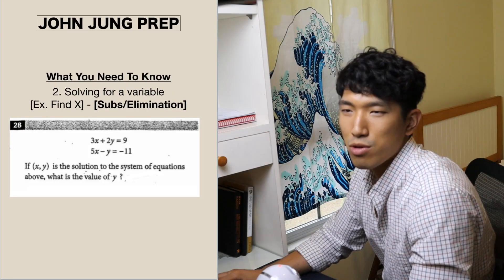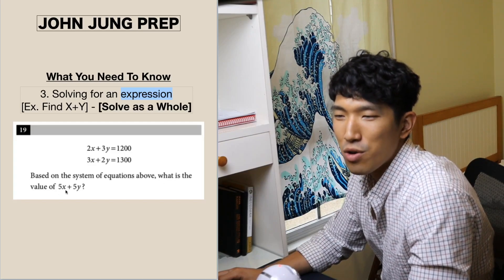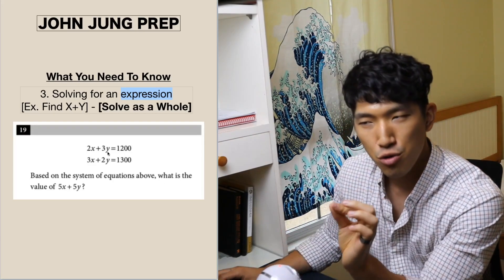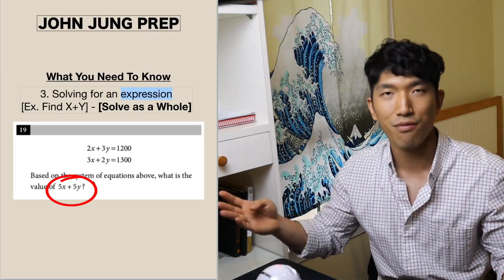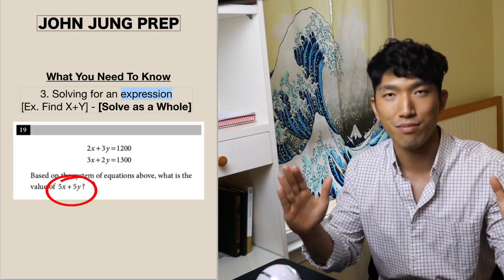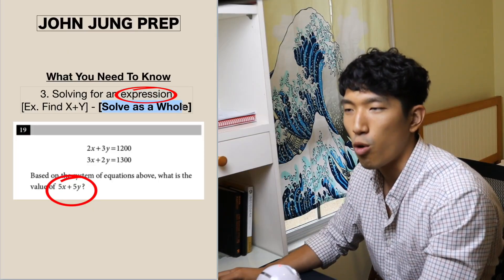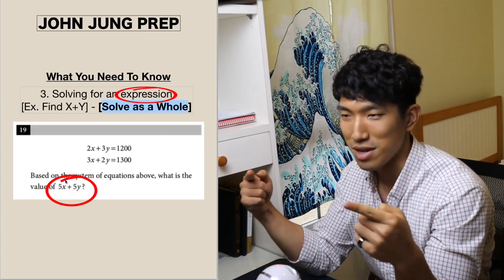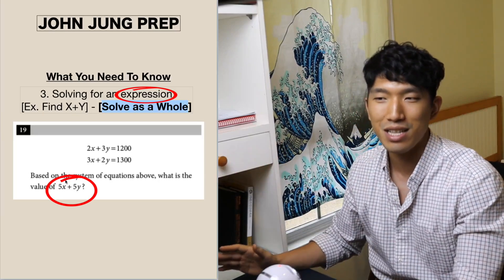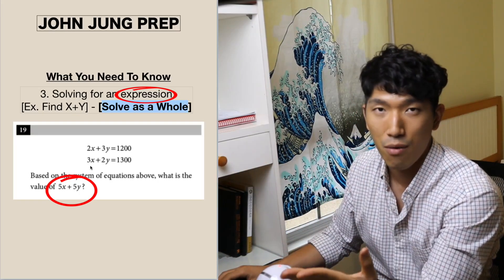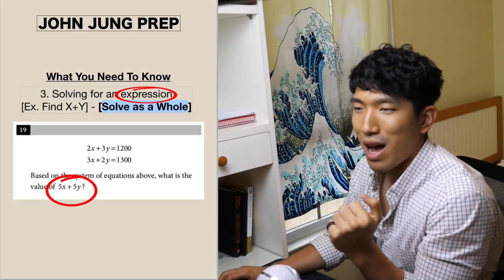The third type is solving for an expression. Unlike the second type where we solve for a variable, here we solve for something like 5x plus 5y. The question asks for an expression, not just x or y individually. When the SAT asks for an expression on a systems question, you solve it as a whole — don't find x and y separately and then plug in. That takes too long and makes things much harder. Those are the three types.